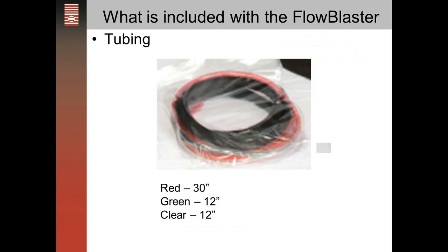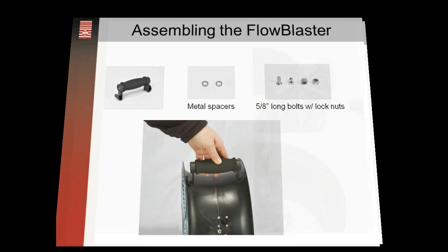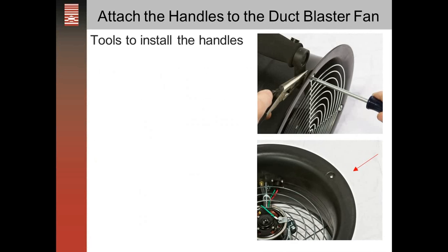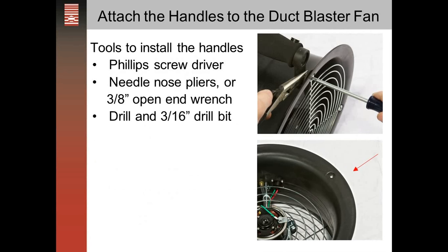The tubing needed for testing is included, as well as the two handles that you'll attach to the duct blaster fan. The tools needed to install the handles are a Phillips screwdriver, needle nose pliers or an open end wrench, and a drill with a 3/16 inch bit. The handle installs at the same location as the grate. On the opposite side of the grate there's a flat spot where you'll drill a hole in the center to install the two handles.